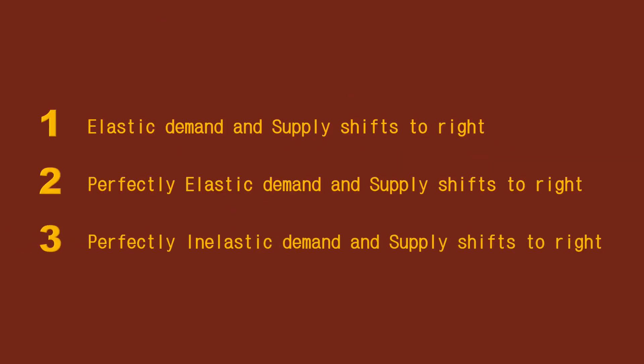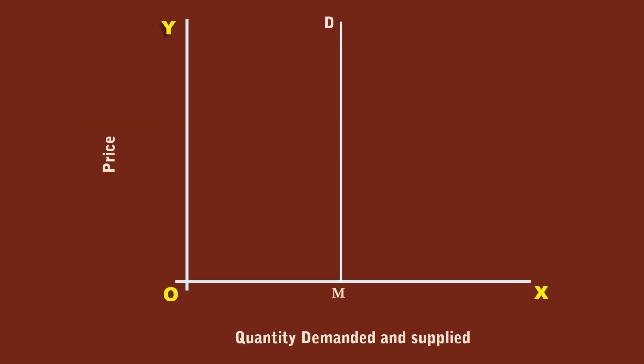Third condition. Perfectly inelastic demand and supply shifts to right. MD is the perfectly inelastic demand curve. It is vertical and parallel to Y axis. E2 is the original equilibrium where supply curve SS intersects demand curve MD. P2 is the price. M is the quantity. Increase in supply results in the shift of the supply curve to the right. The new supply curve is S1, S1.